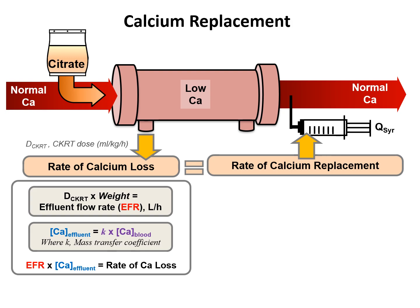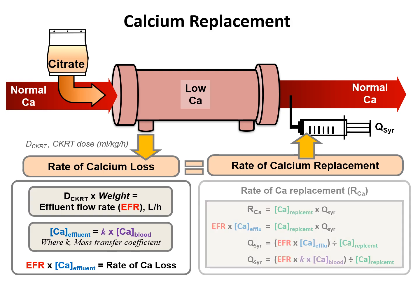The rate of calcium loss is related to the prescribed CKRT dose, the weight of the patient — which gives us the effluent flow rate — and the mass transfer coefficient of calcium to the effluent. The rate of calcium replacement is therefore related to the effluent flow rate. These calculations help us determine the syringe flow rate, which is dependent on the effluent flow rate, the calcium mass transfer coefficient, and the concentration of the calcium fluid used for replacement.